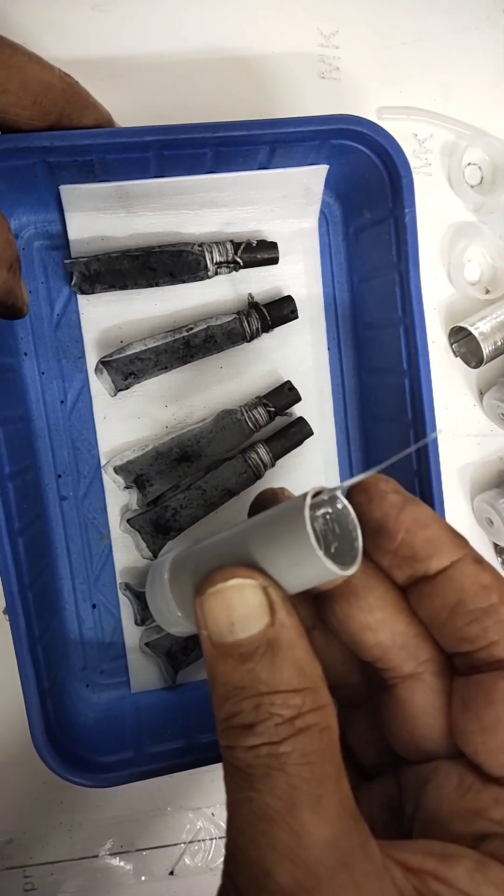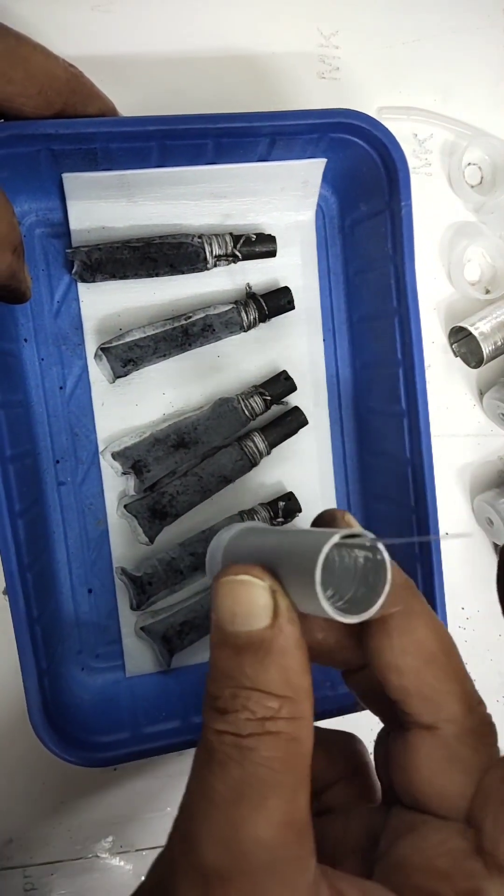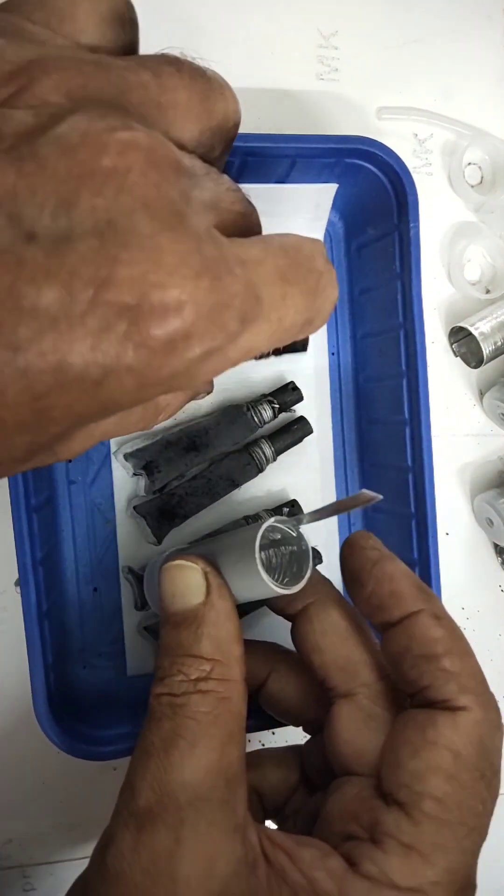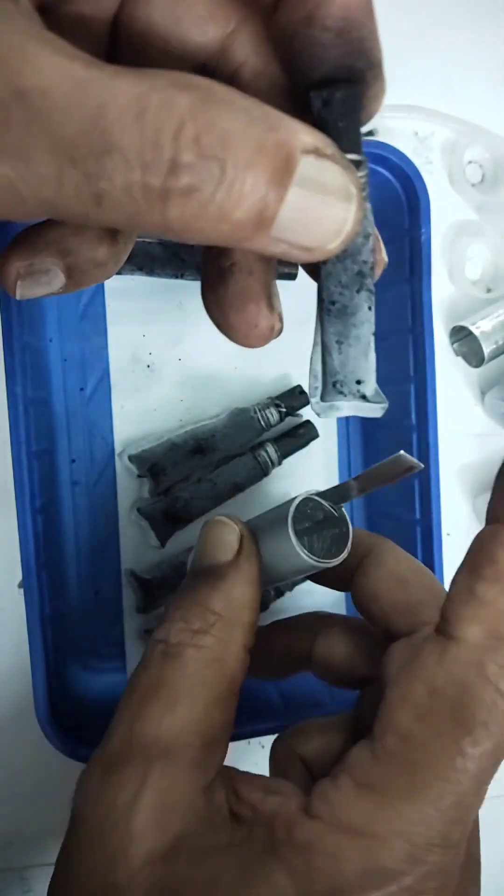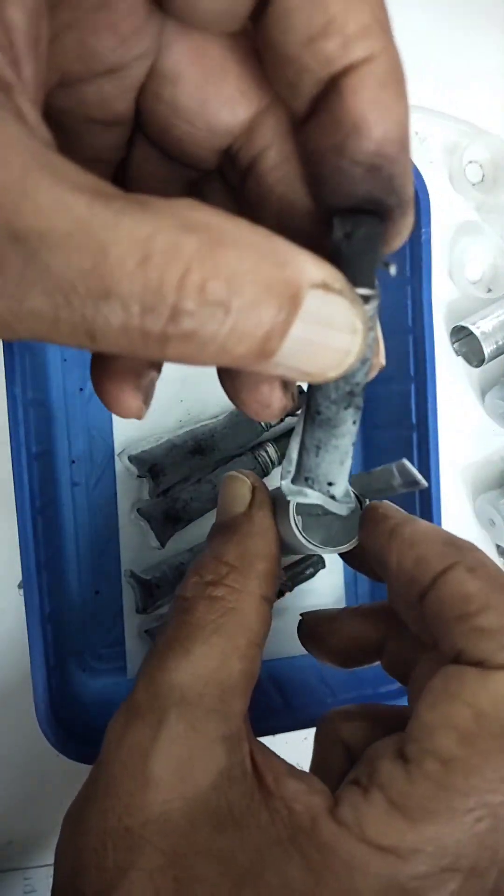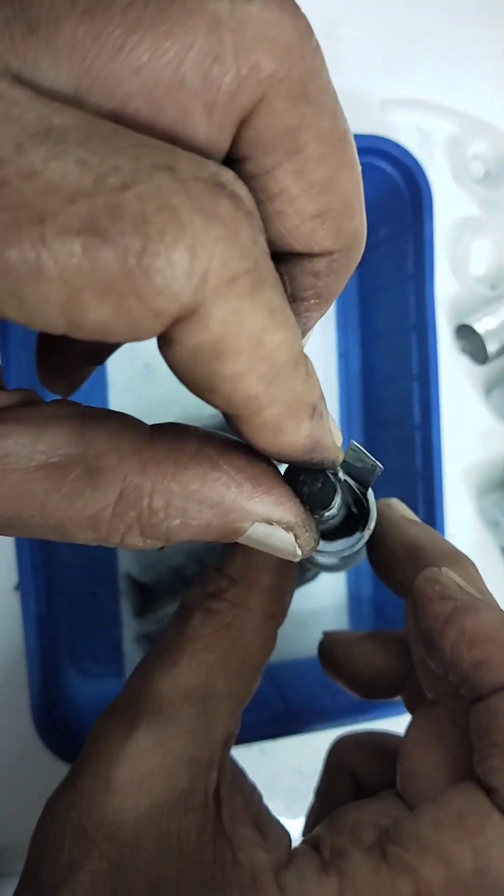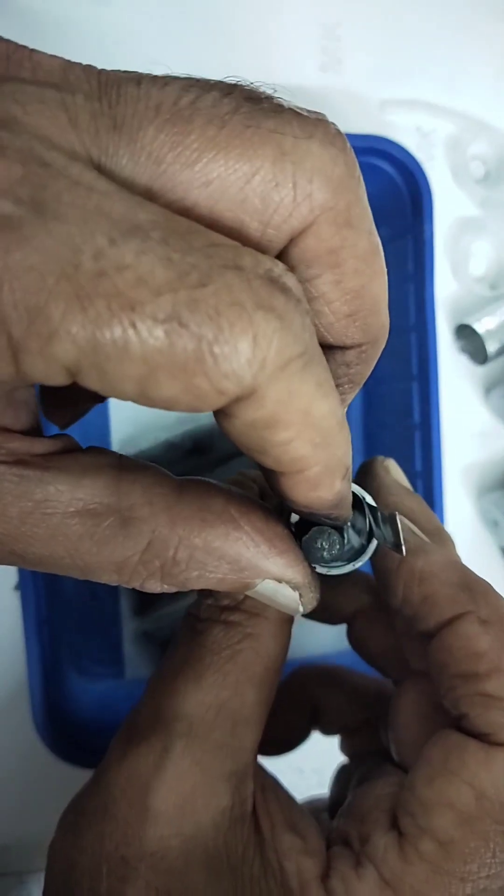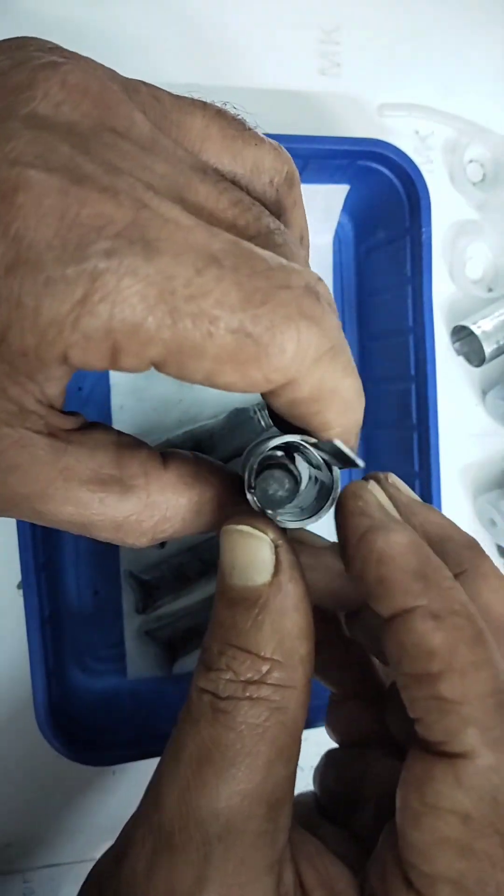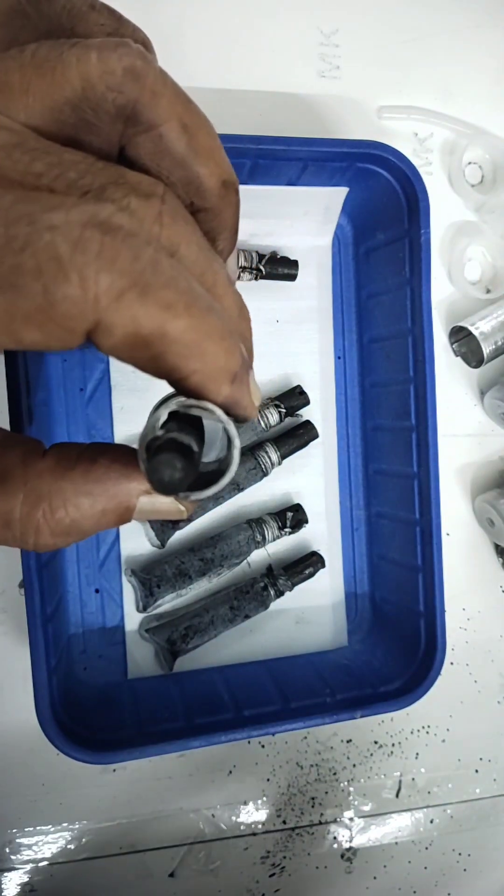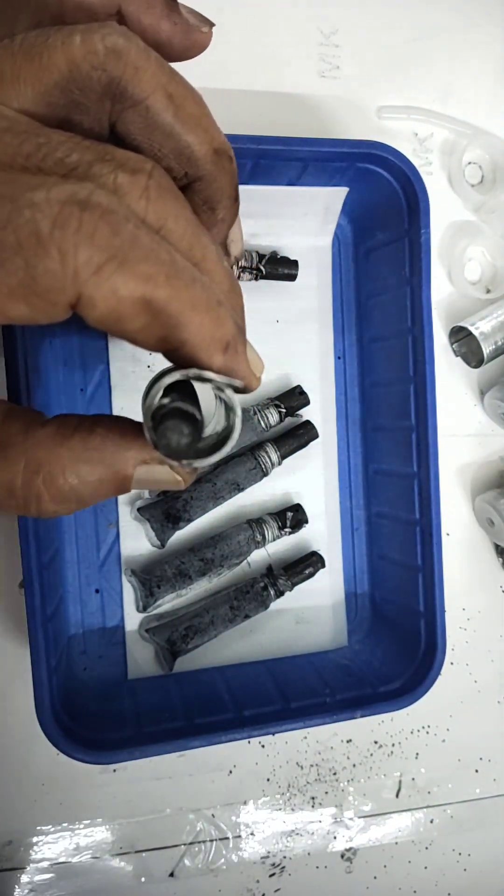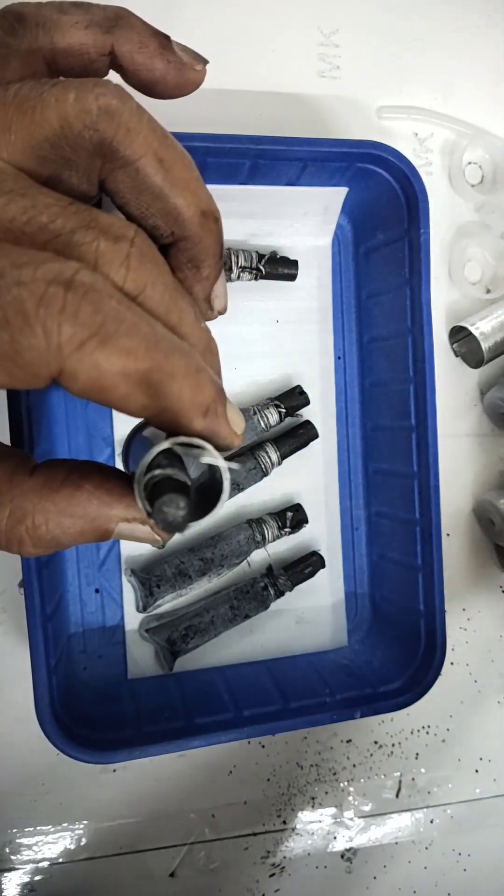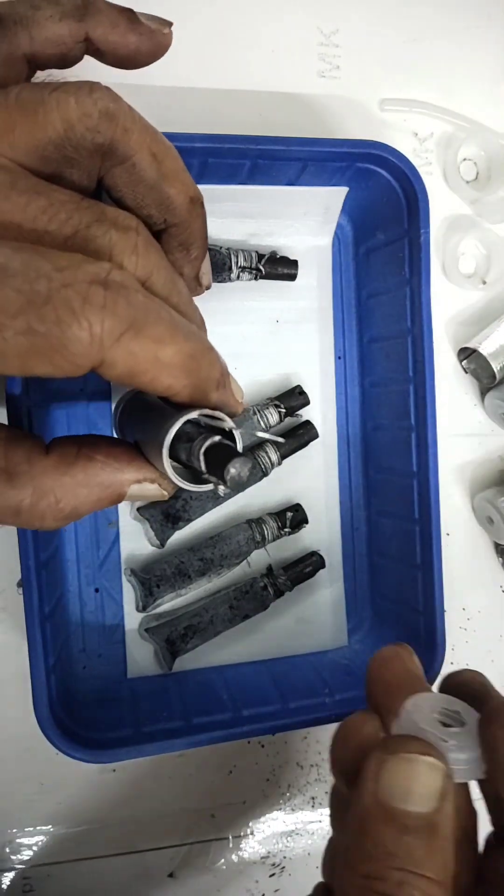I will insert in individual cells. Before that I will put some filter cloth so that the electrodes should not touch each other. In that gap we will be filling this electrolyte, that is 2N sodium hydroxide.